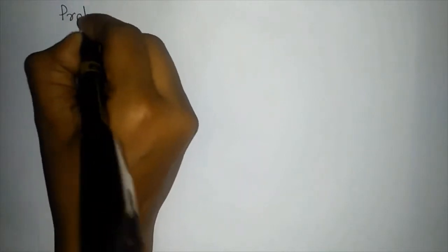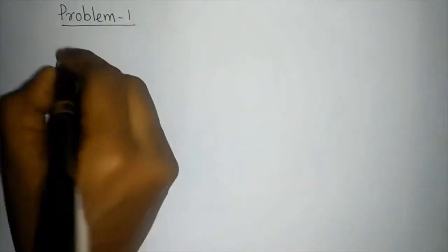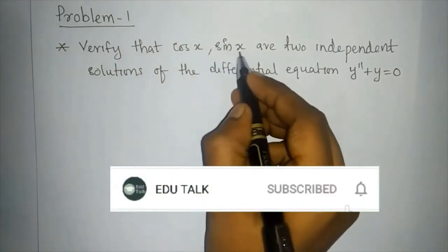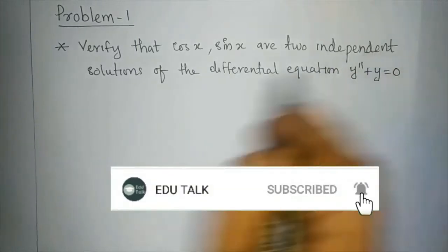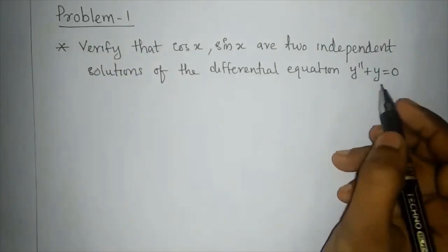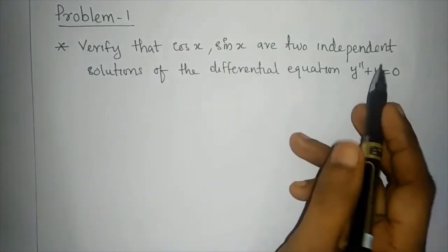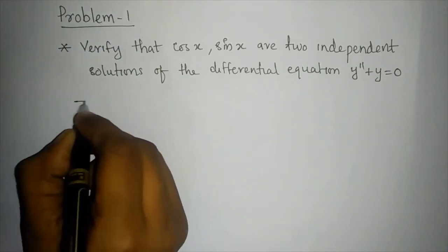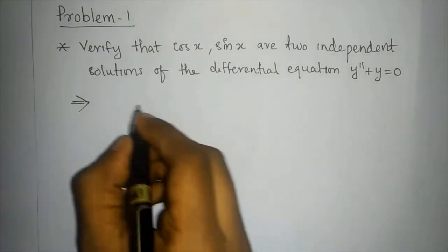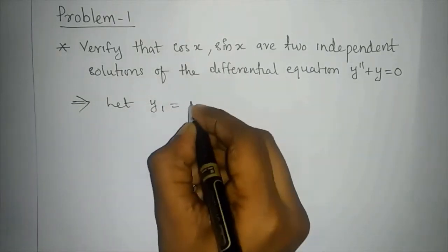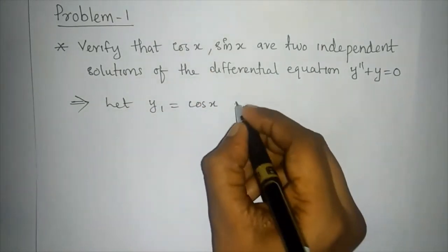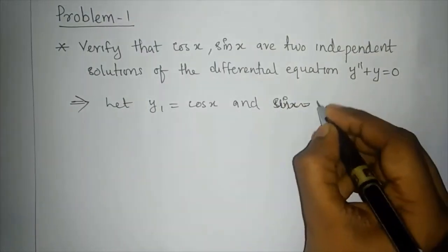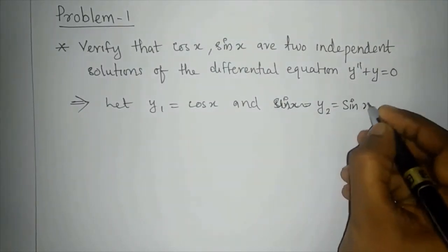Let's go to the first problem. Verify that cos x and sin x are two independent solutions of the differential equation y'' + y = 0. Let y1 = cos x and y2 = sin x as the two solutions.